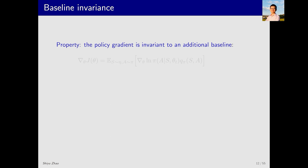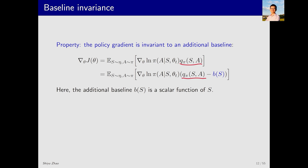First of all, let's check an interesting property. The policy gradient that we derived earlier is invariant to an additional baseline. This is the gradient we derived previously. If we subtract a new baseline denoted as B from the Q value Q_pi, this does not change the gradient. Here, this baseline B is a function of the state, and it's a scalar function. These two equations are equivalent — no matter what the function B is, the result will be the same.